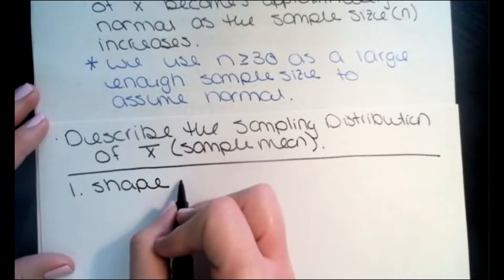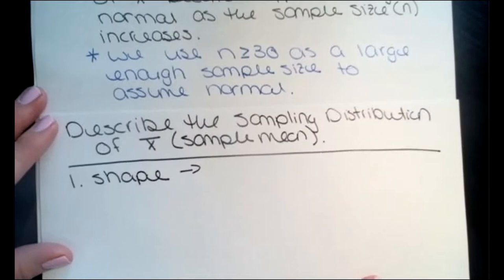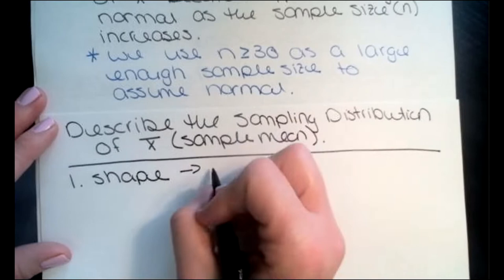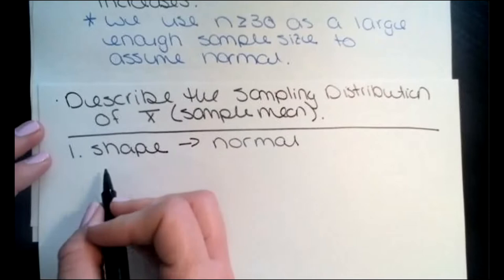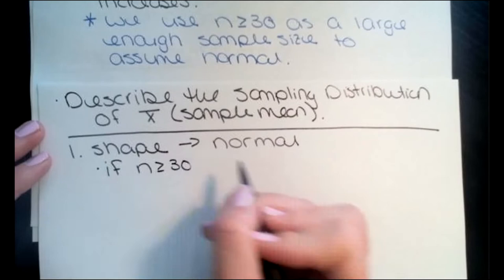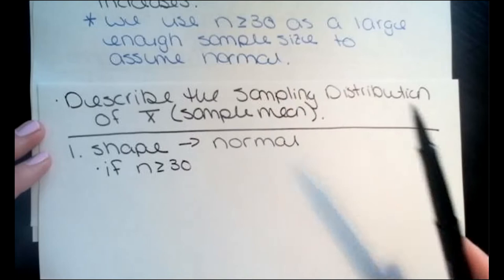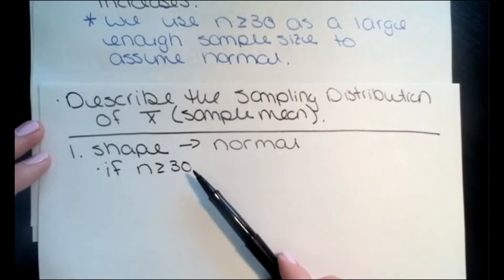I want to be able to say the shape is normally distributed because I want to calculate probabilities or percentiles like we've been doing. I need to prove normality — I can't just say it's normal. I have three different ways to do this. The first way, which I always check first, is if n is greater than or equal to 30 — the central limit theorem. If the sample size is large enough, I can assume the sampling distribution is symmetric.